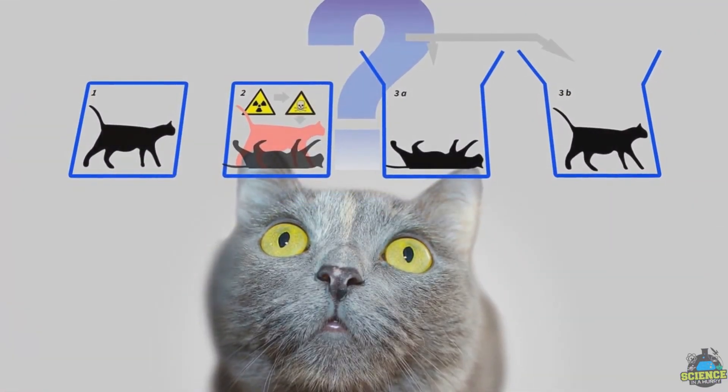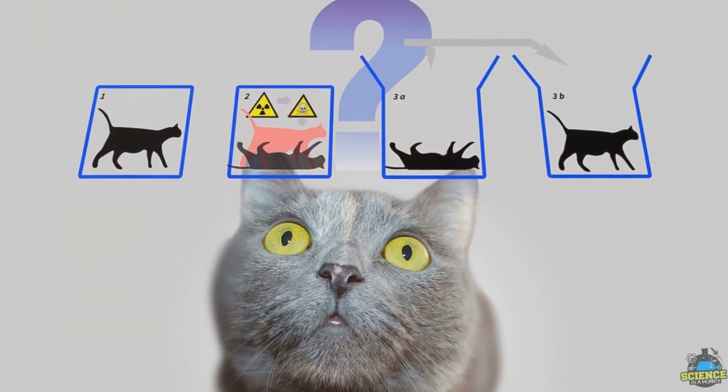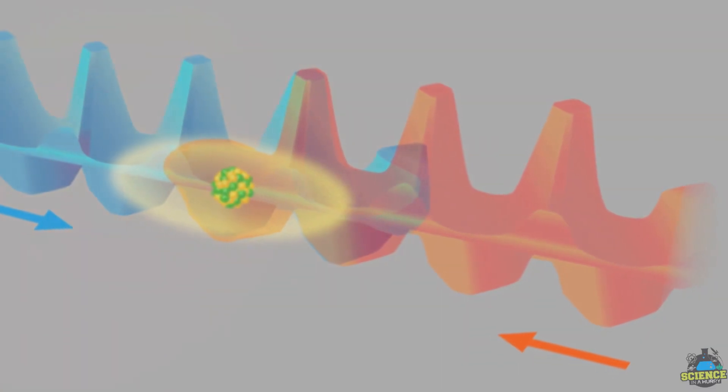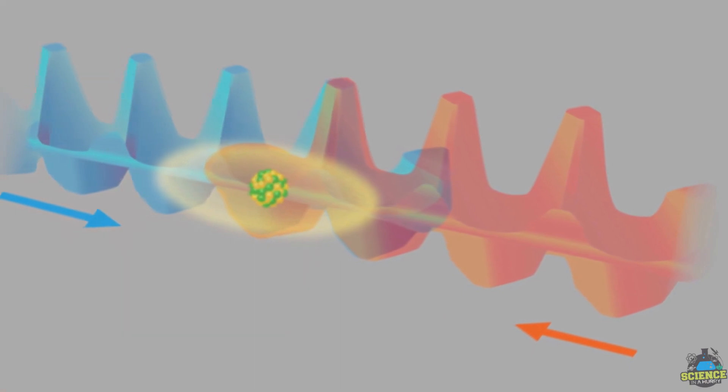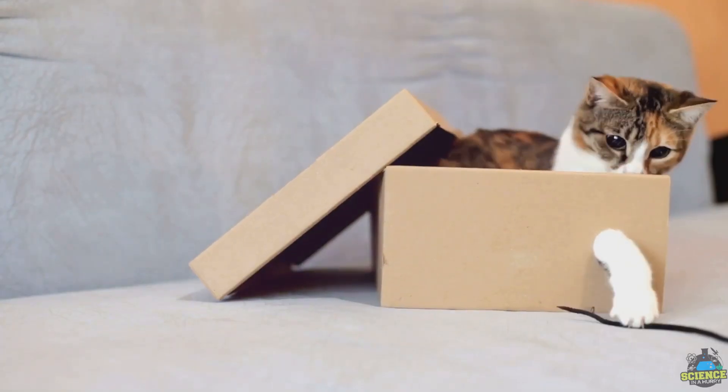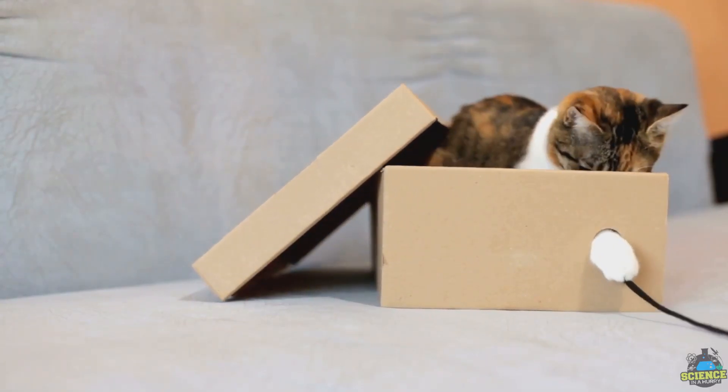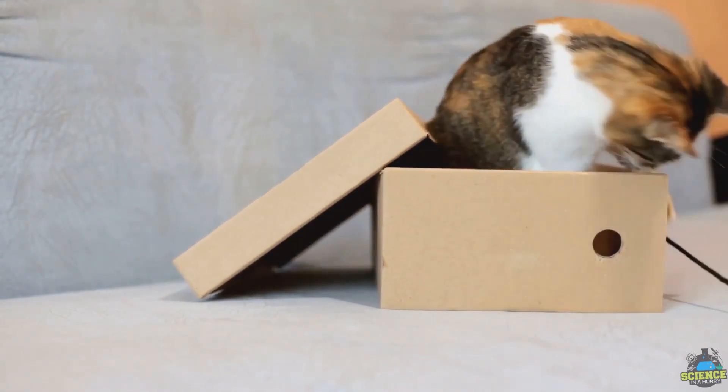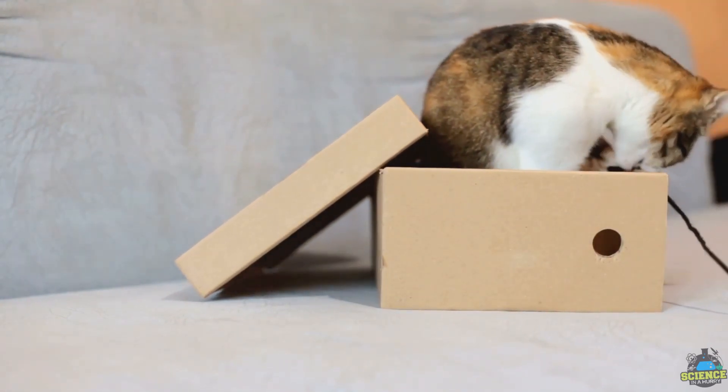Imagine a cat that is both alive and dead at the same time. Sounds absurd, doesn't it? Welcome to the world of superposition, the cornerstone of quantum mechanics. This concept, as mind-boggling as it may seem, tells us that particles can exist in multiple states at once, just like our hypothetical cat.